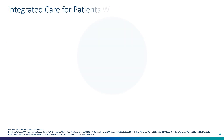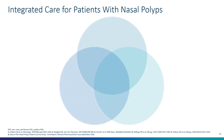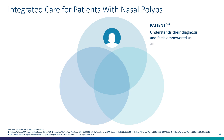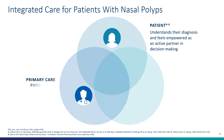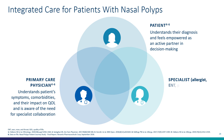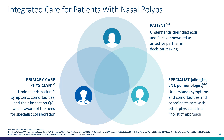An integrated care approach for patients with nasal polyps is demonstrated in this Venn diagram. The patient understands the diagnosis and feels more empowered, allowing for active and shared decision-making. The primary care physician understands how symptoms relate to comorbidities and quality of life. The specialist focuses on integrating symptoms and comorbidities into a management approach. It truly requires an interdisciplinary, shared decision-making model to improve the care of patients with nasal polyps.